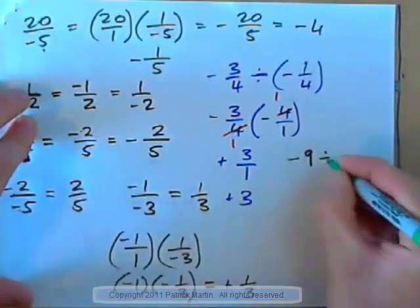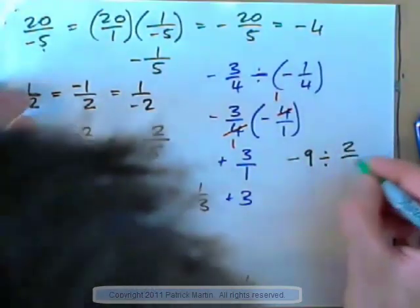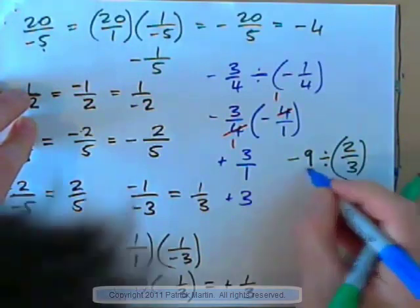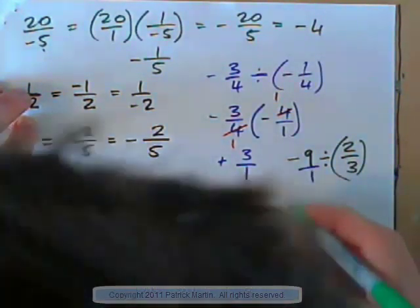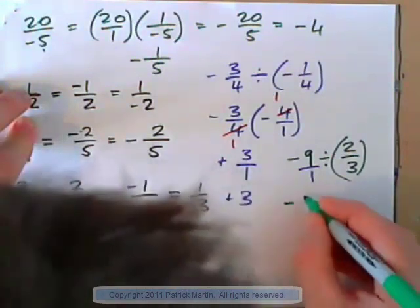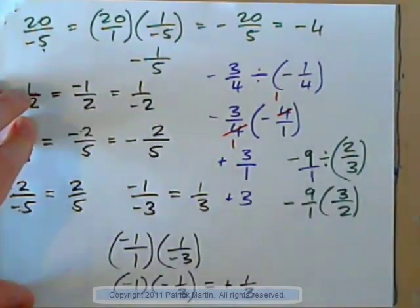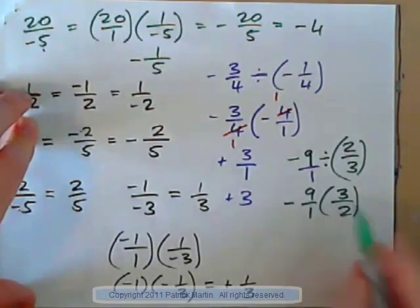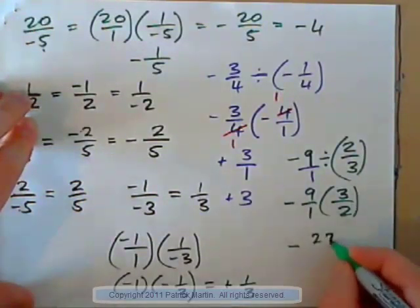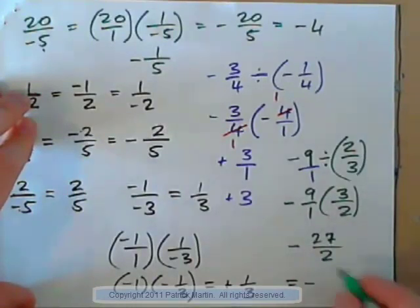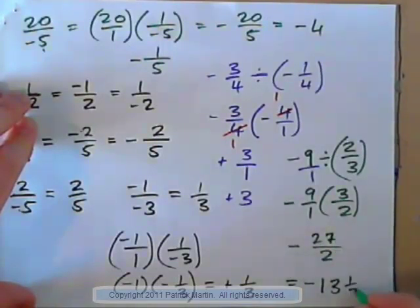How about negative 9 divided by two-thirds? When dividing fractions, if you've got an integer, change it to a fraction. So that's negative 9 over 1 multiplied by the reciprocal, 3 over 2. Negative times positive is negative. 9 times 3 is 27, 1 times 2 is 2, giving negative 27 over 2. Write that as a mixed number also: 2 into 27 goes 13 times remainder 1, so negative 13 and a half.